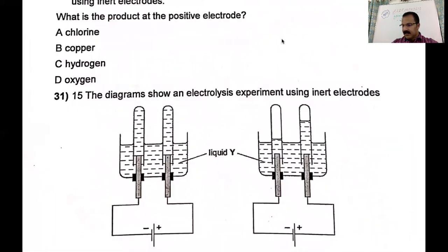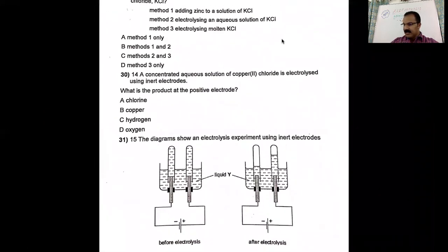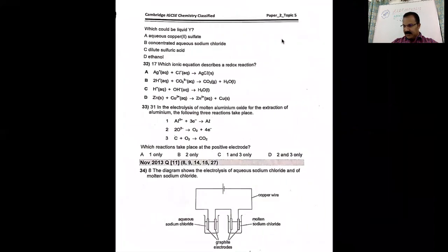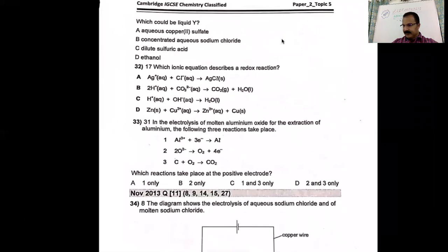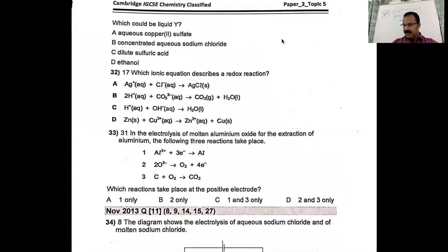The next diagram shows an electrolysis experiment using inert electrodes — before and after electrolysis. We have already done this question. The answer is dilute sulfuric acid, which gives hydrogen and oxygen in the ratio 2:1.